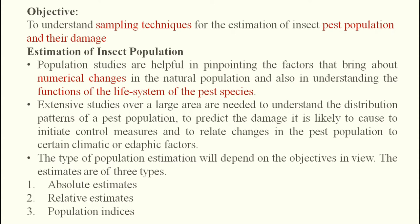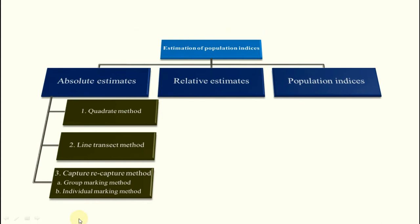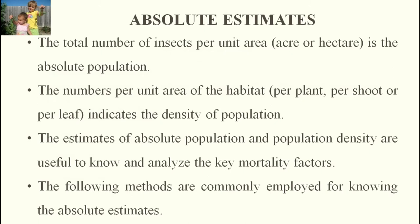Three types of population estimation exist: first is absolute estimates, second is relative estimates, and third is population indices. In absolute estimates, there are three subcategories: the quadrat method, line transect method, and capture-recapture method.